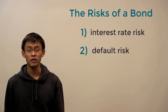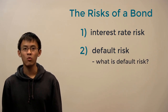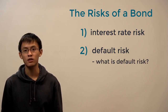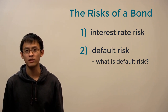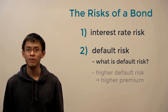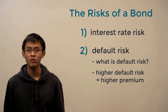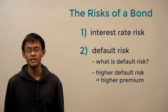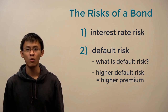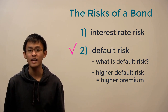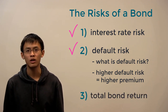First, we'll learn what default risk is and how it is measured. Next, we'll learn how default risk affects the return on a bond. We'll see that companies with a higher risk of default must pay an additional premium in the form of a higher interest rate to investors in order to convince them to invest in their bonds. And lastly, we'll learn how both default risk and interest rate risk contribute to the total return on a bond.